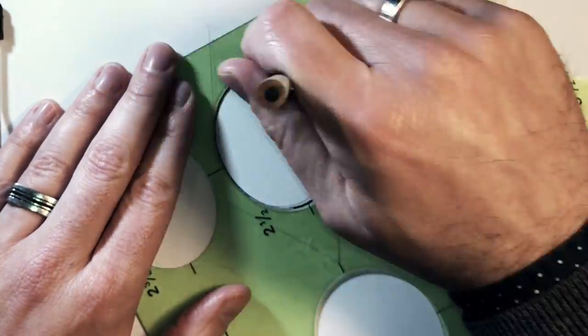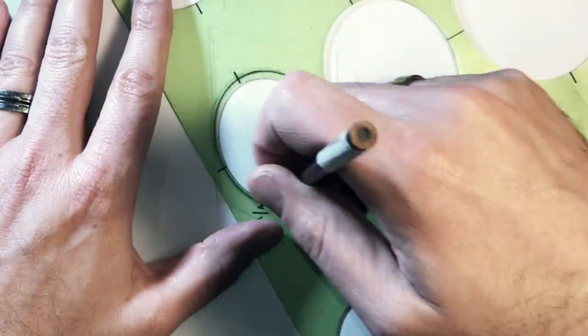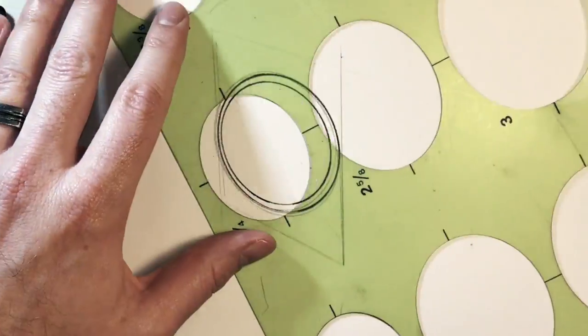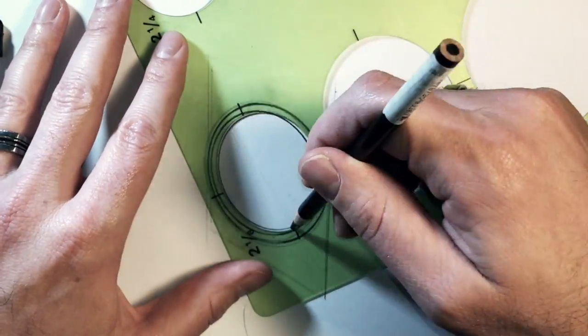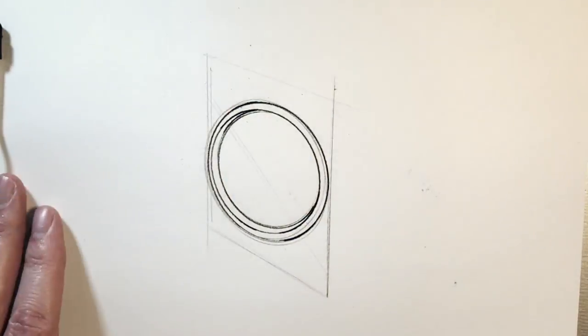Now notice I've got an ellipse guide, but as I use the ellipse guide I'm moving it around a little bit so that the sketch stays loose, the lines aren't too tight, it's not too neat.